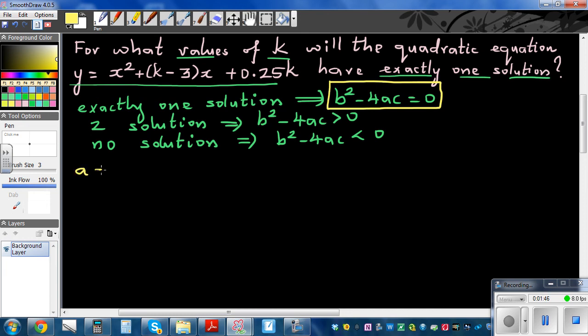Well, a is 1, b is k minus 3, and c is 0.25k, or a quarter k.